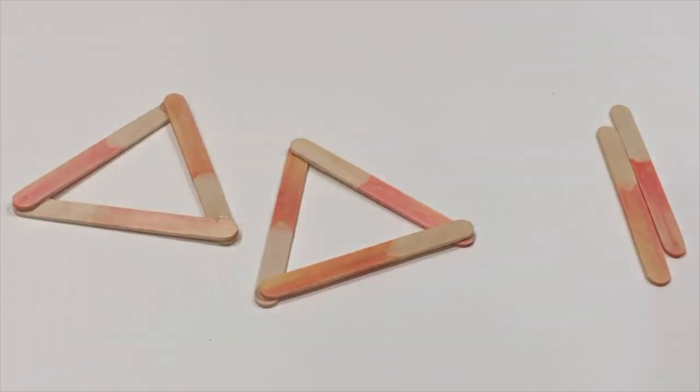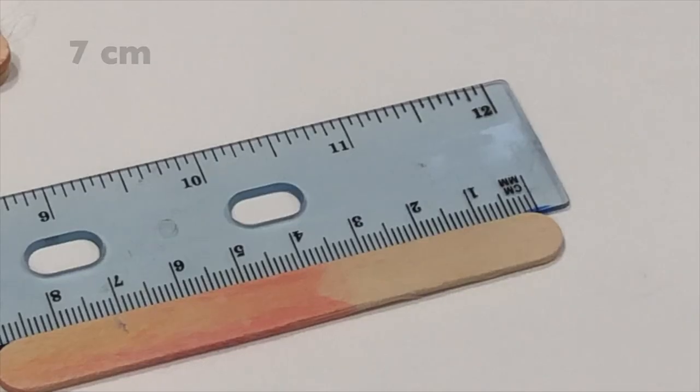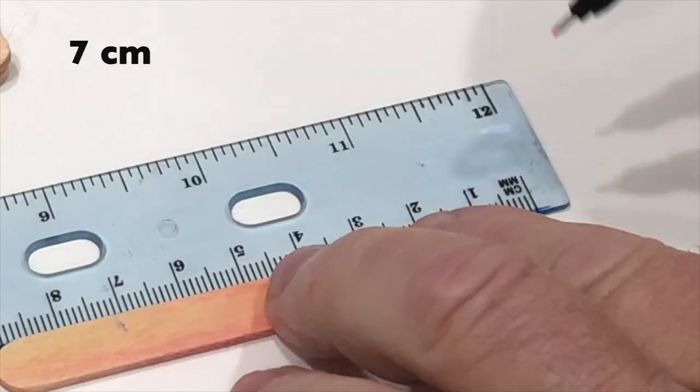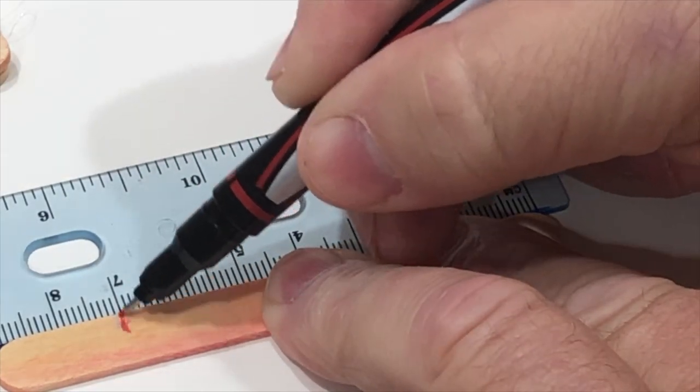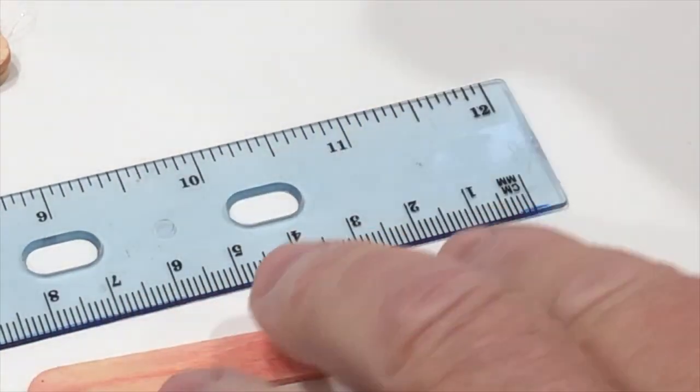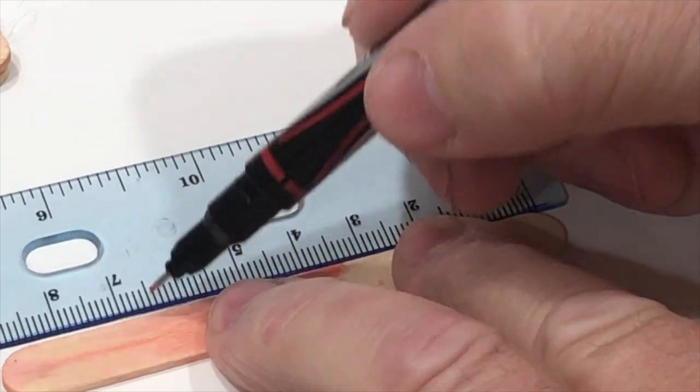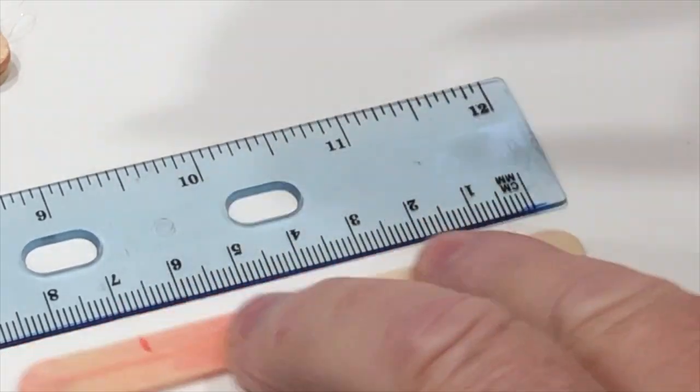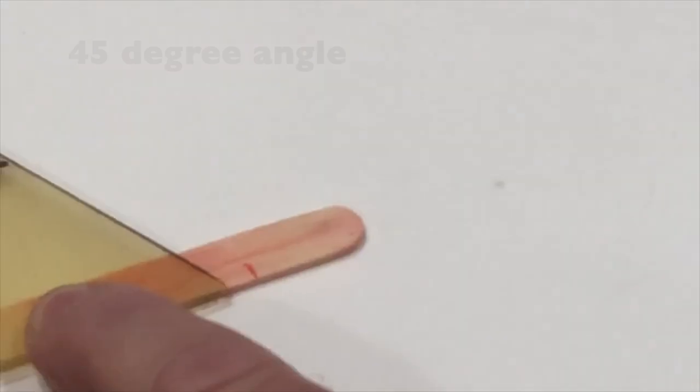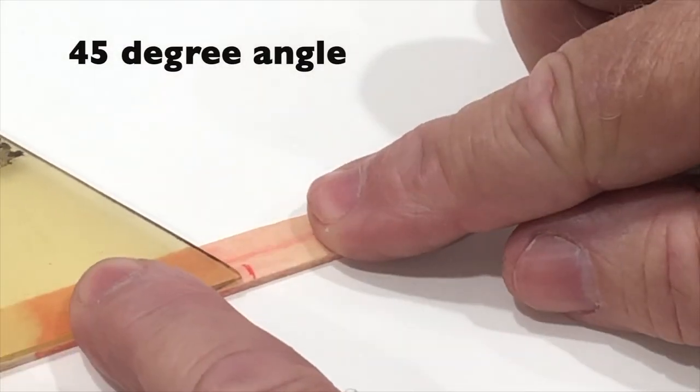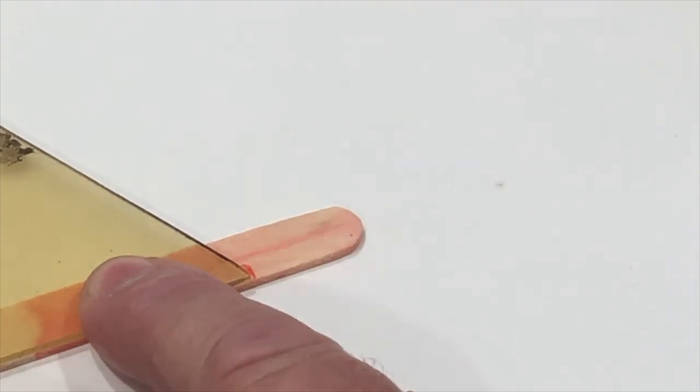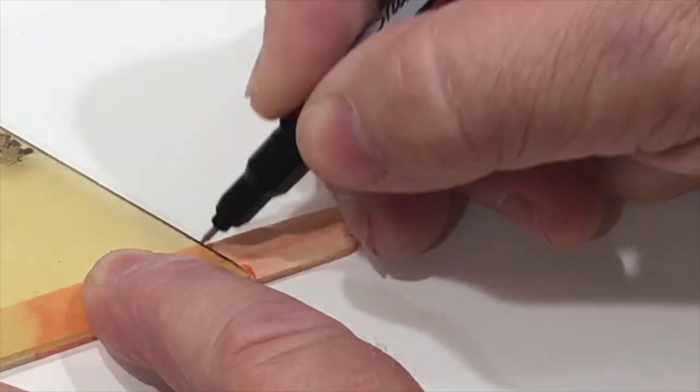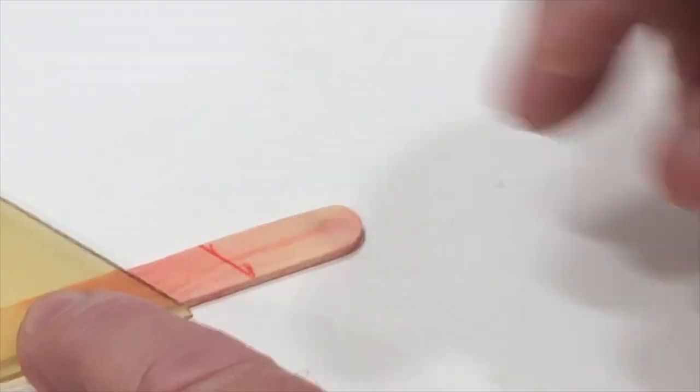Now we're going to take the two other popsicle sticks and cut those. First we're going to measure each popsicle stick to be seven centimeters long. Once we mark both of those, we're going to take a 45 degree angle and mark those up so they have a little bit of an angle. Right to the seven centimeters, and then we make the 45 up from the seven centimeters. Now we're going to cut them.